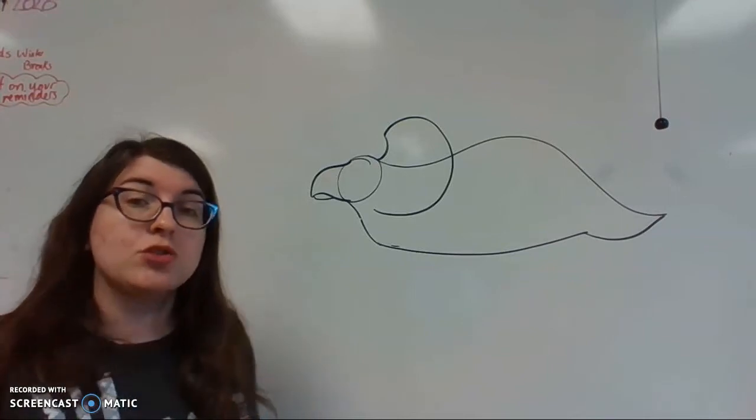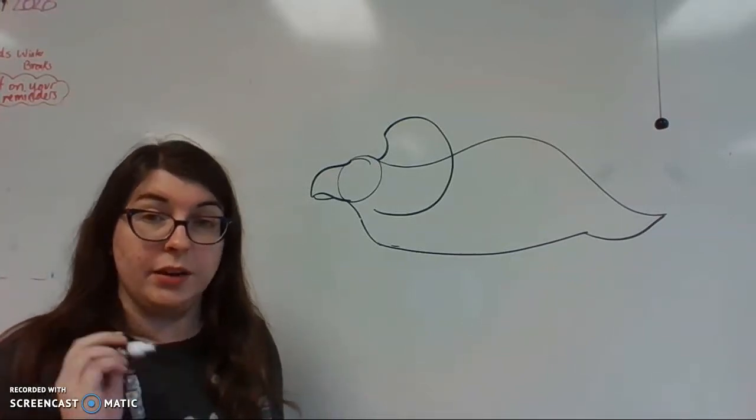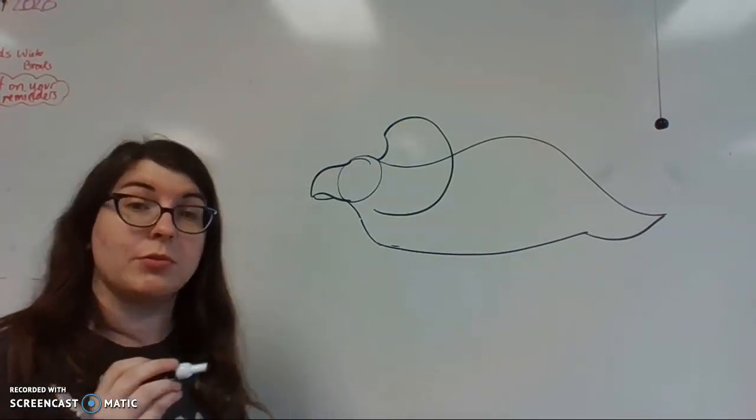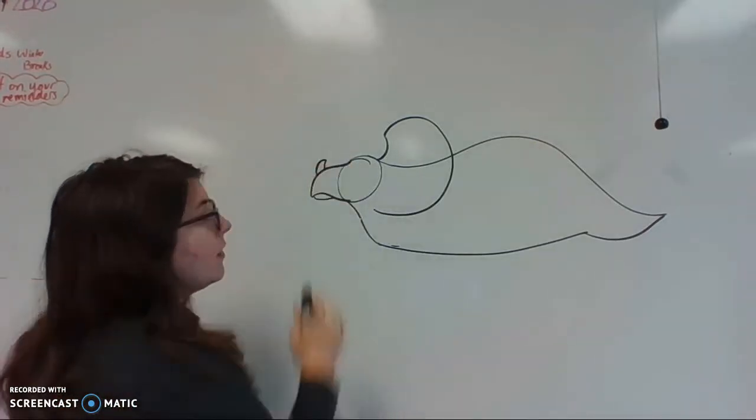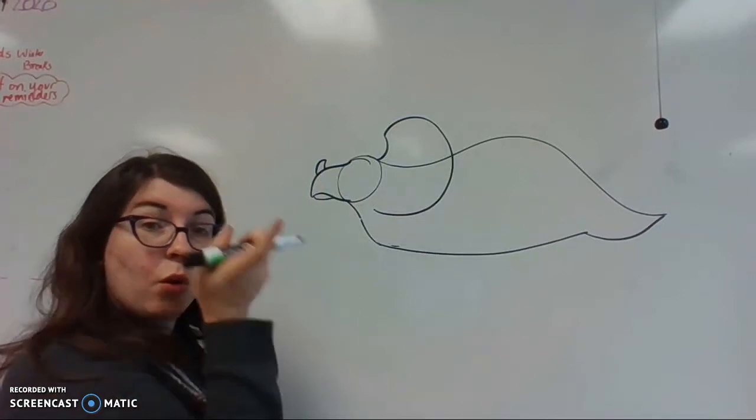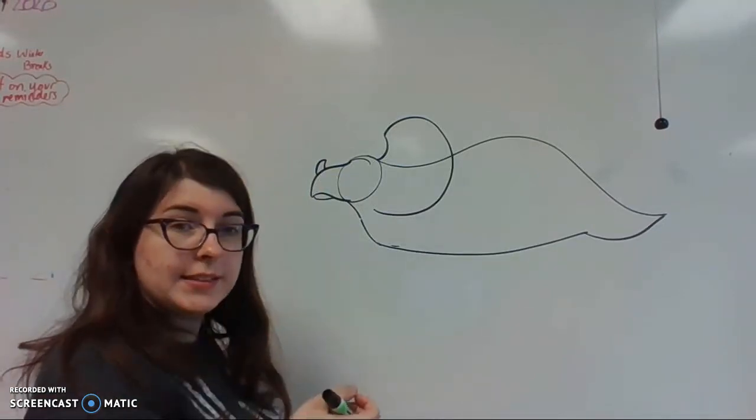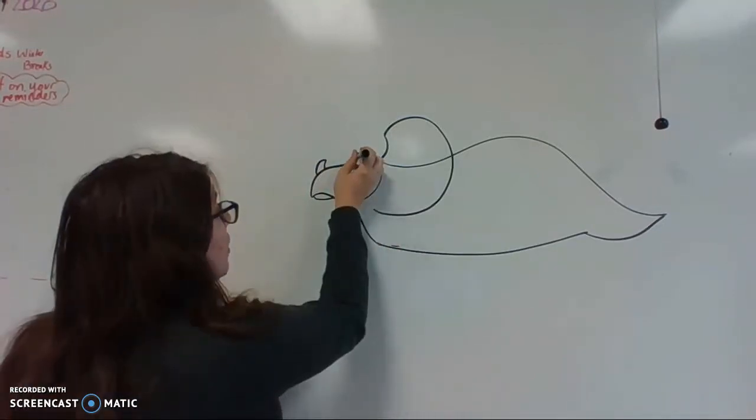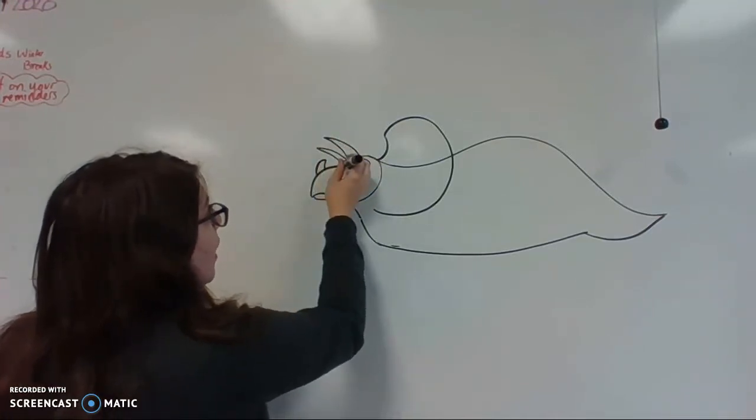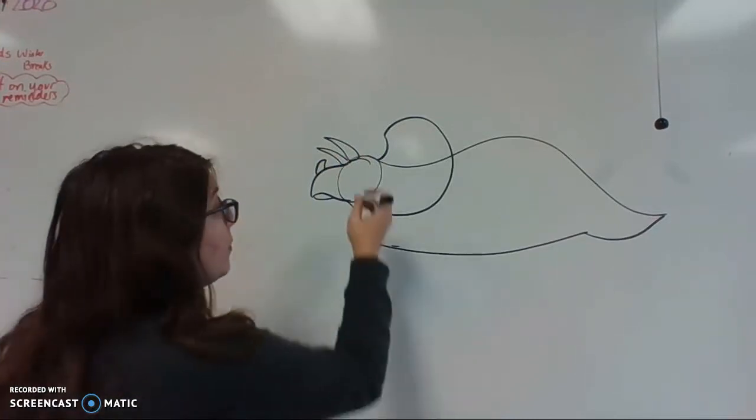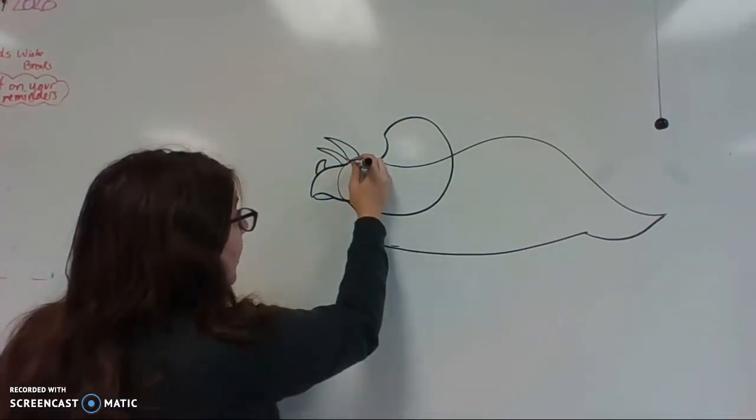And remember, Triceratops has three horns. So now it's time to put in those three horns. One of them is on the nose. I like how my horn points towards the face. The other two are going to point the opposite direction, and they're both right over the eyes. Okay? Speaking of which, let's go ahead and draw in our eye.